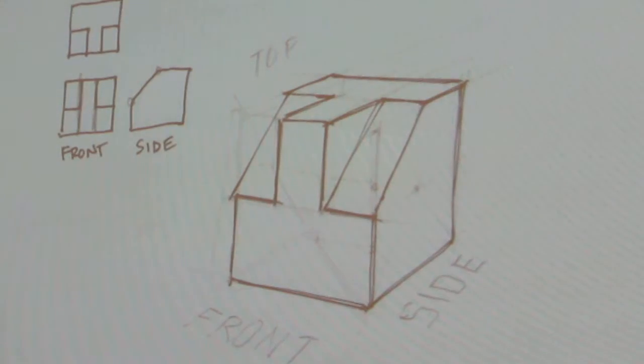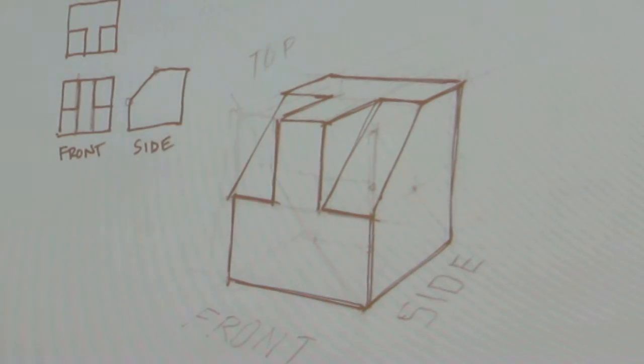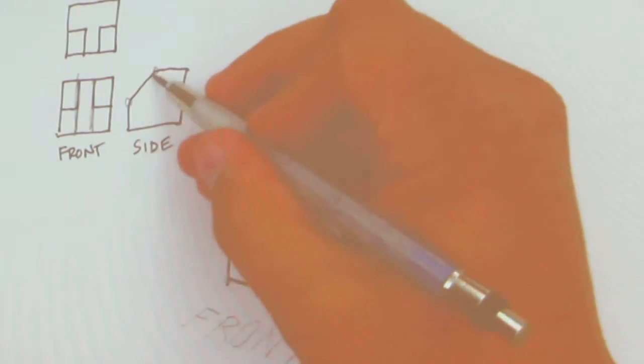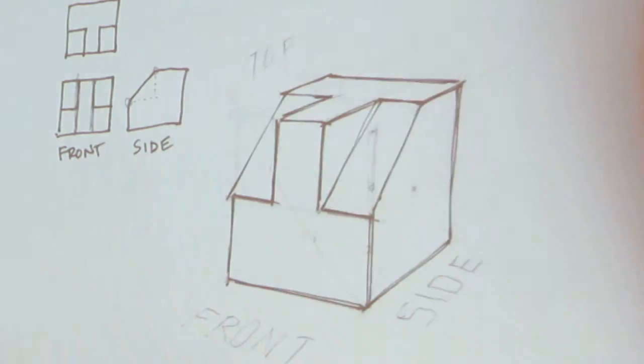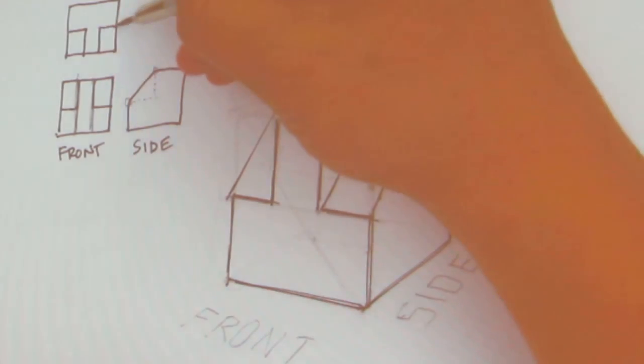Student: Usually, wouldn't the side view also include the part in the middle that goes up? Like, usually you have the side and then a line that includes that. Otherwise, we don't know that there's a diagonal on that back side. Instructor: Well, you do because there's nothing else there. Because if there were something else there, you would see this.